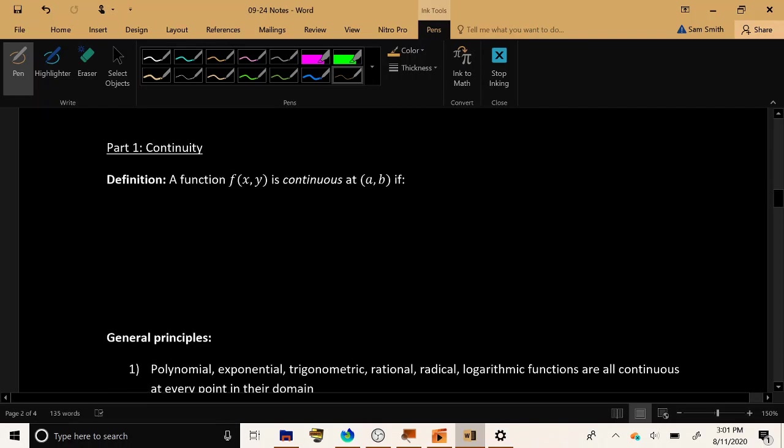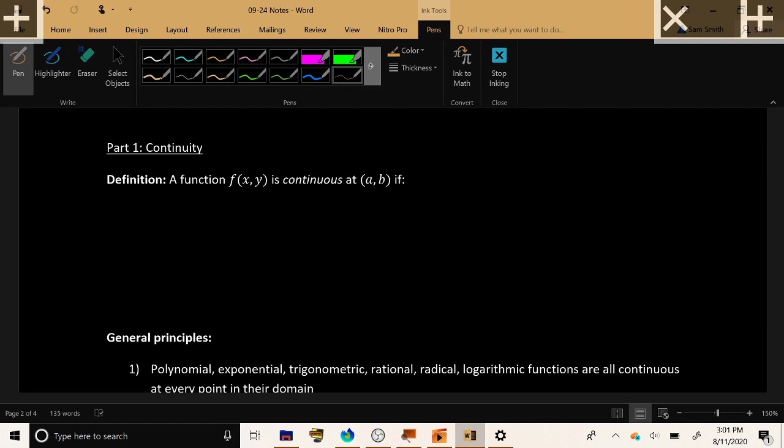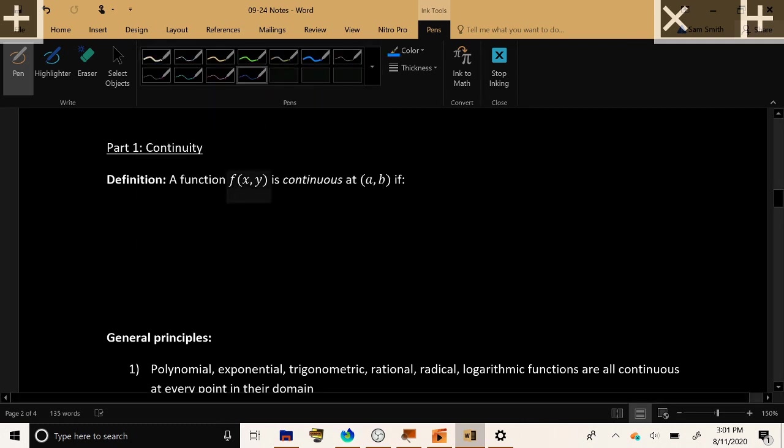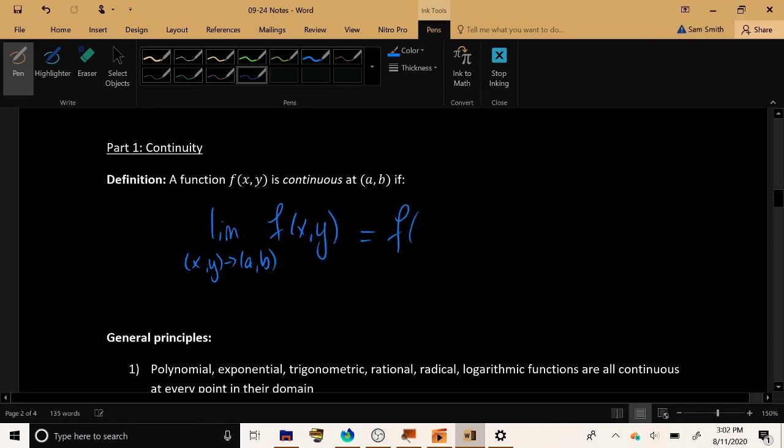Now continuity, I don't have too much to say about this, we're just going to establish once and for all what this term means. And it's exactly the same really as it was in Calculus 1. A function is continuous at a point if the quantity that you get by approaching in the limit agrees with the quantity that you get by plugging that point directly into the function. Now this statement has a couple of implications. First of all, in order to compare these two numbers,